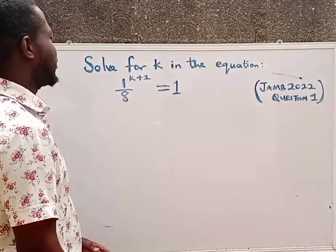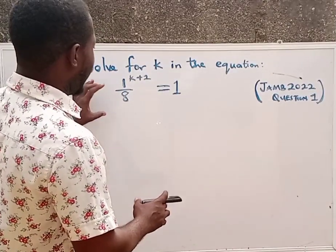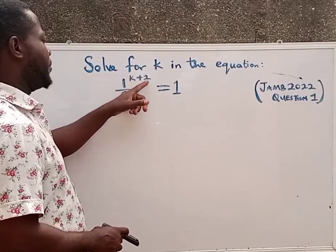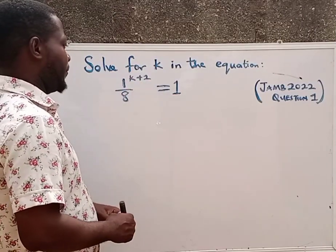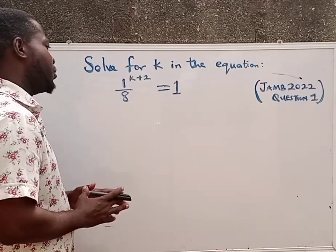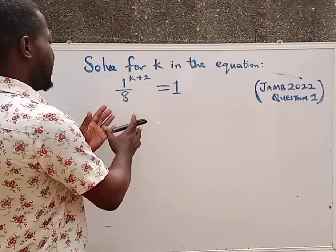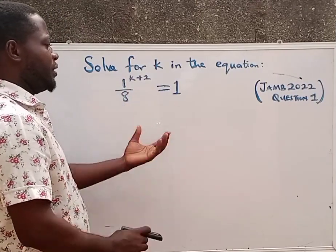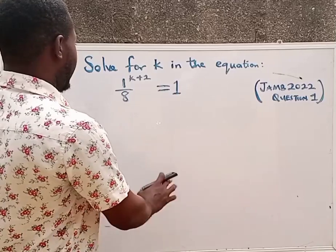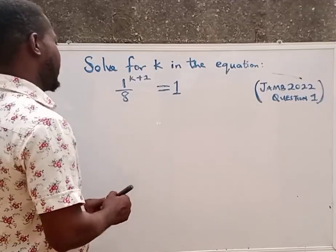The first task is we should solve for k in this equation. We have 1 over 8 raised to the power of k plus 2 equals to 1. The first thing to do is to change this to index form. This question is an exponential equation, so we have to first change 8 to index form.